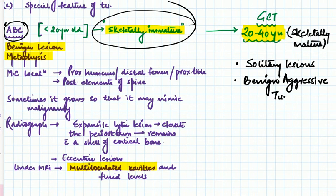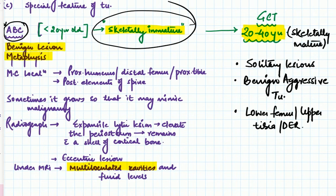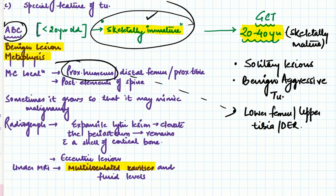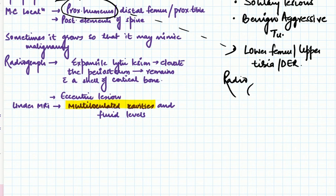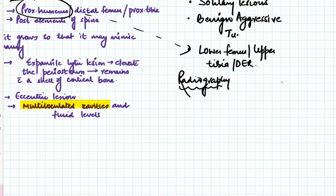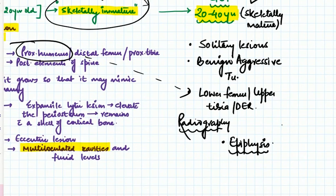Giant cell tumor prefers the knee region — lower femur, upper tibia — and also the distal end of the radius. On radiography, GCT is an eccentric lesion located in the epiphysis. This is the second major difference from ABC, which occurs in the metaphysis.